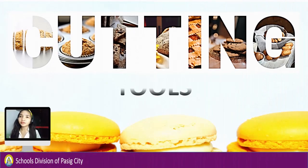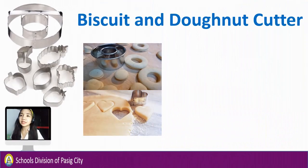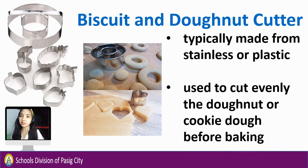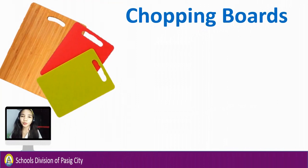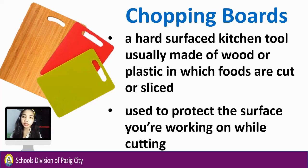Next, we have cutting tools. In general, they are used for cutting, peeling, or chopping ingredients. Biscuit and donut cutter is typically made from stainless steel or plastic, used to cut evenly the donut or cookie dough before baking. Chopping board is a hard-surfaced kitchen tool usually made of wood or plastic on which foods are cut or sliced, used to protect the surface you're working on while cutting.